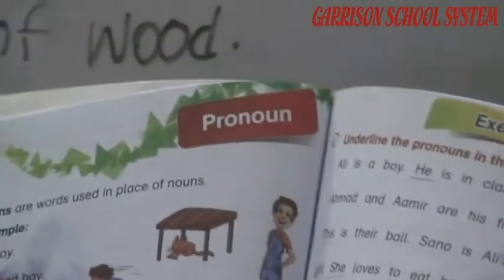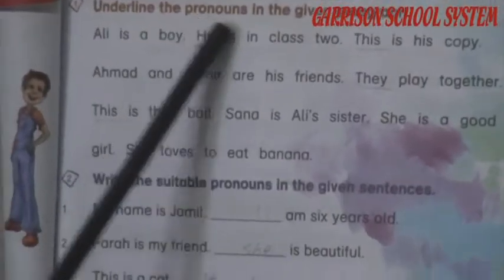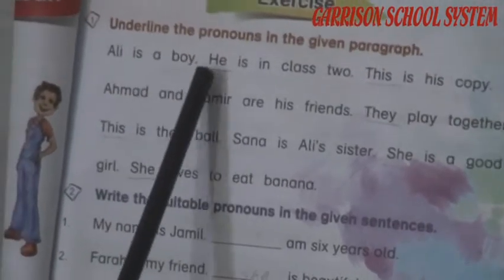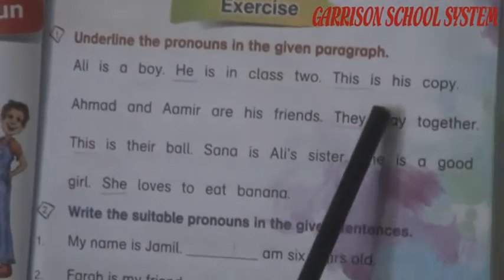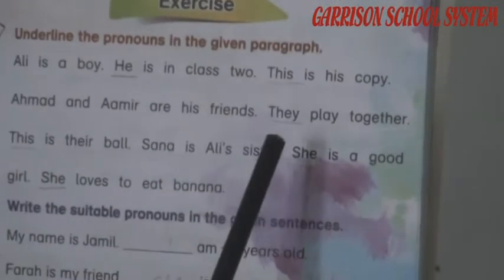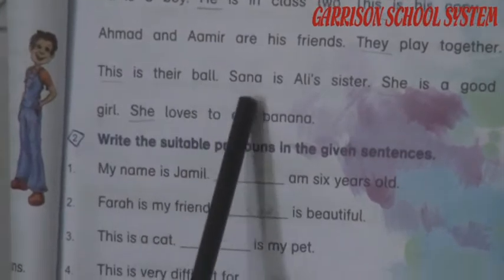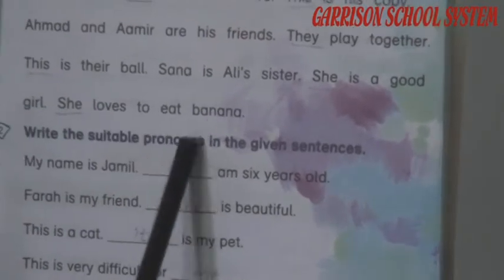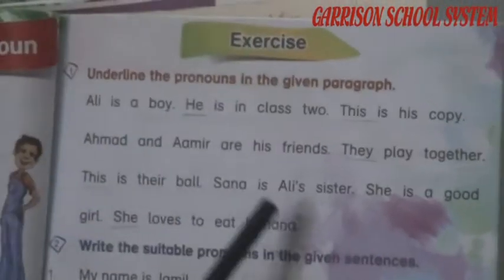Look at page 21 — they have given you an exercise about pronouns. The definition: we use a word to replace a noun, giving it a simple and specific name. First exercise: underline the pronoun in the given paragraph. Example: 'Ali is a boy' — pronoun is 'he'. 'He is in class 2. This is his copy. Ahmad and Amir are his friends. They play together.' So 'they' is a pronoun. 'This is their ball. Sana is a girl. She is a good girl.' She is a pronoun — underline it. 'She loves to eat banana.' Underline 'she'. You have to underline all pronouns in the paragraph.